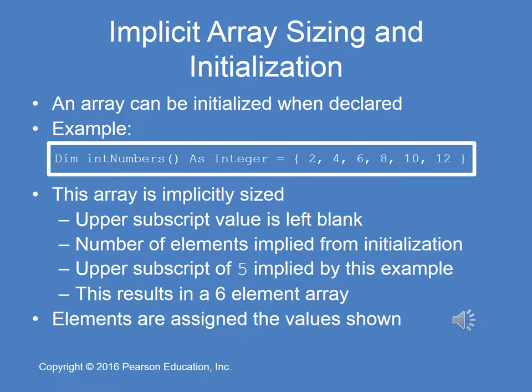In this coded example, similar to the previous one where we simply declared an array int numbers, we don't have to give the largest index number because it's implicit. So here we declare using dim int numbers as an integer, and we assign int numbers in this format: 2, 4, 6, 8, 10, 12. The upper subscript is implied because we're initializing six values, so the result is a six-element array.